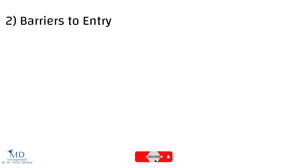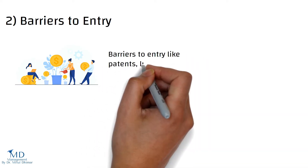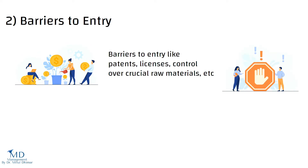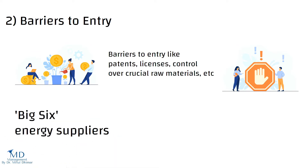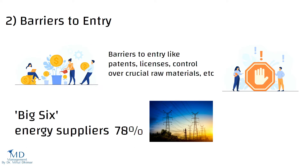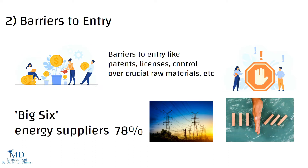Second, barriers to entry. Under oligopoly, a firm can earn supernormal profits in the long run as there are barriers to entry like patents, licenses, and control over crucial raw materials. These barriers prevent the entry of new firms into the industry. For example, the big six energy suppliers dominate the UK market with a combined market share of 78% for electricity supply, according to the energy regulator. This is a technical barrier to entry in the oligopoly market.